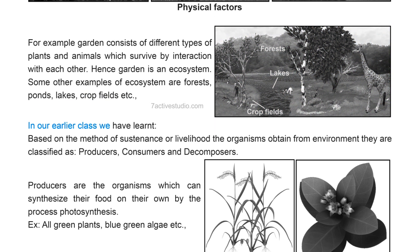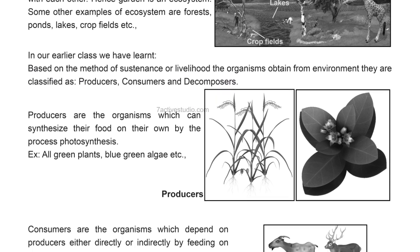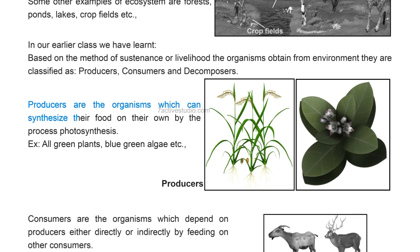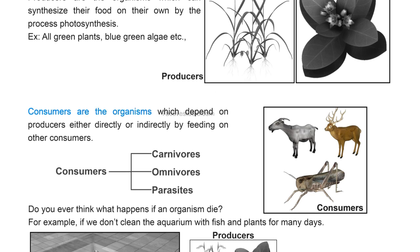Based on the method of sustenance or livelihood, organisms in the environment are classified as producers, consumers, and decomposers. Producers are organisms which can synthesize their own food through photosynthesis — examples include all green plants and blue-green algae. Consumers are organisms which depend on producers either directly or indirectly by feeding on other consumers.